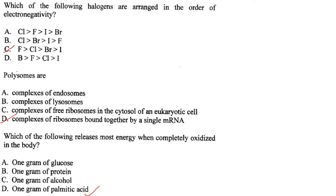Which of the following halogens are arranged in order of decreasing electronegativity? Fluorine > chlorine > bromine > iodine. Answer is option C.